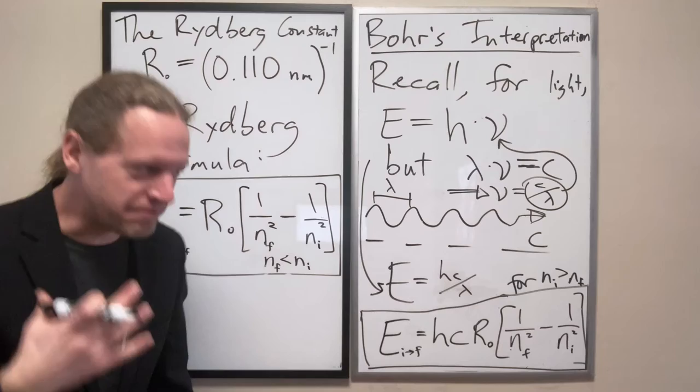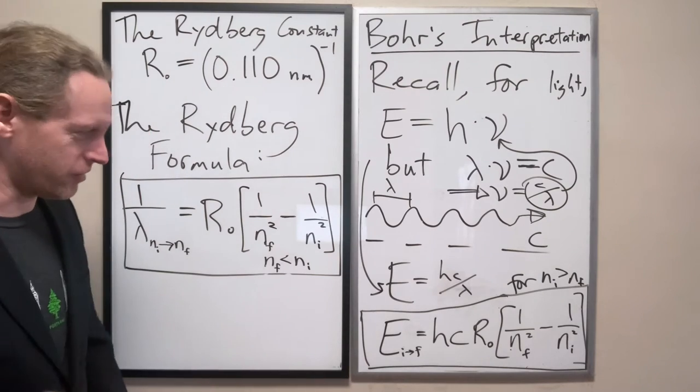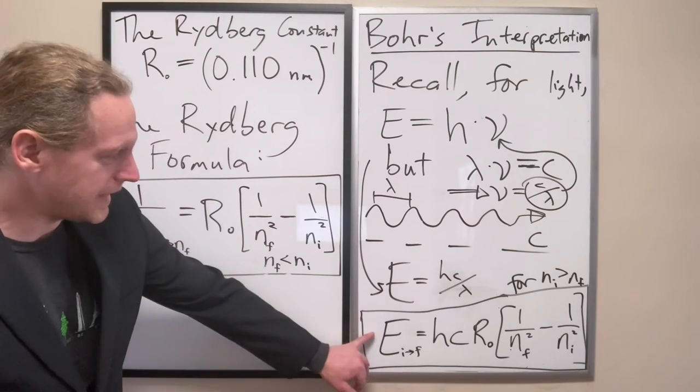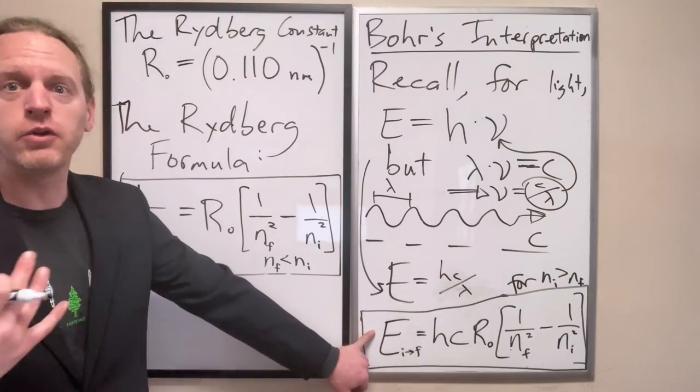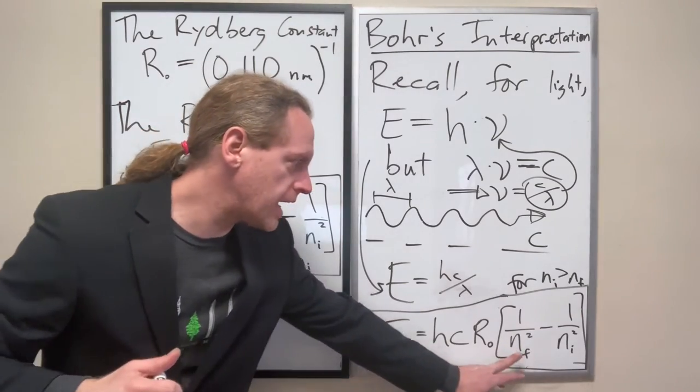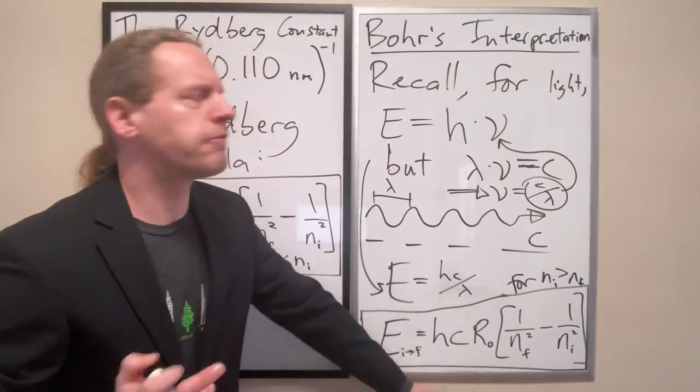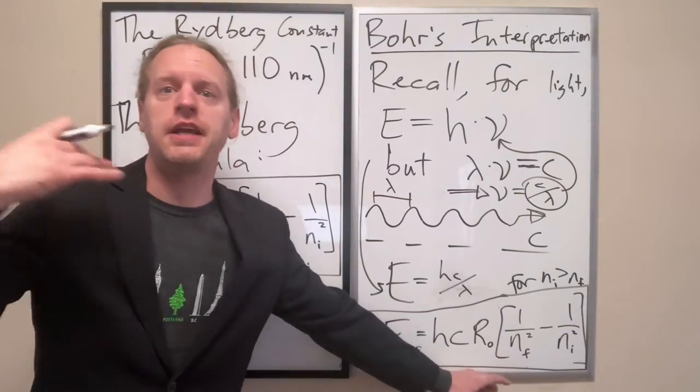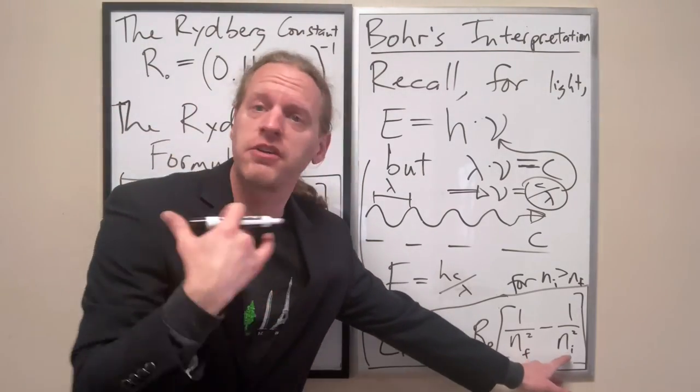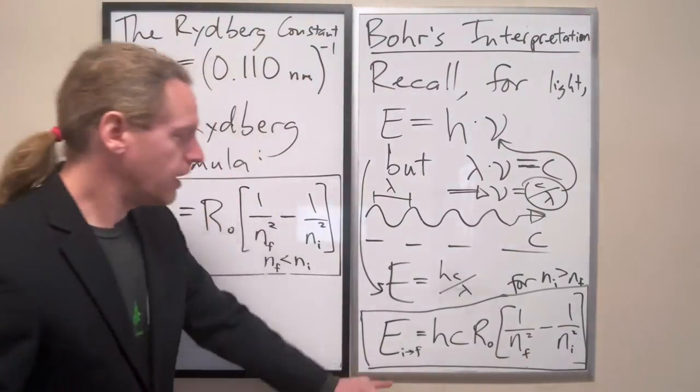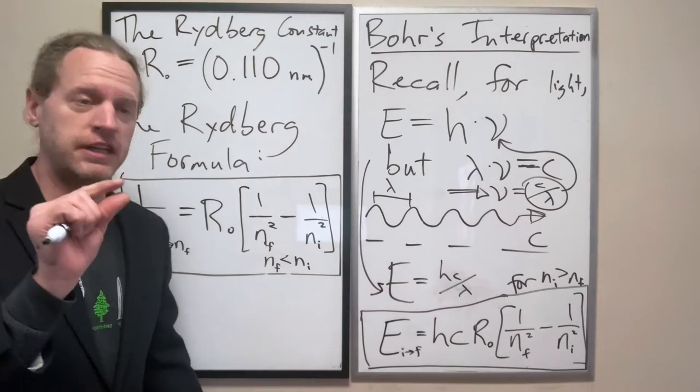And this is a fundamentally groundbreaking equation here because we now have values for any, if you choose any Ni, if you choose any NF, choose any other value Ni, any integer Ni above that, you can now calculate a very distinct energy.